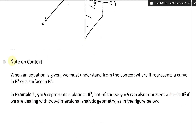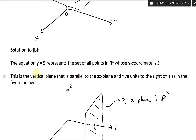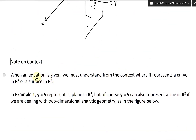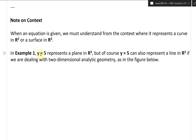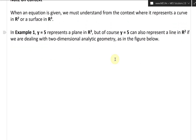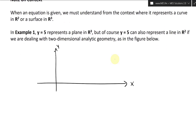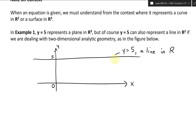A quick note on context: when an equation is given, we must understand from context whether it represents a curve in R2 or a surface in R3. In Example 1, Y equals 5 represents a plane in R3. But Y equals 5 also represents a line in R2 when dealing with two-dimensional analytic geometry — it's just a horizontal line at Y equals 5 on an XY axis.